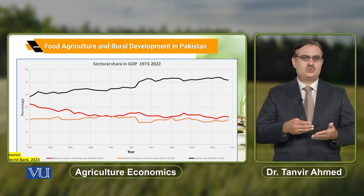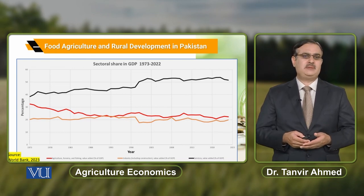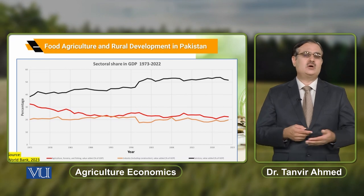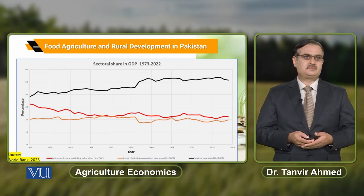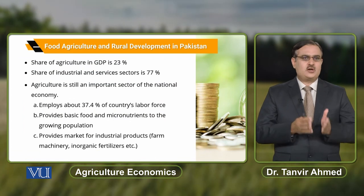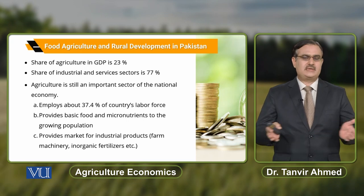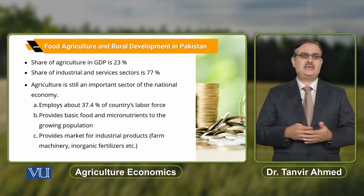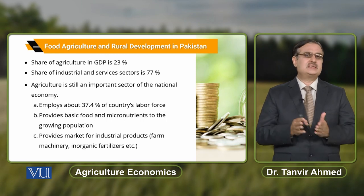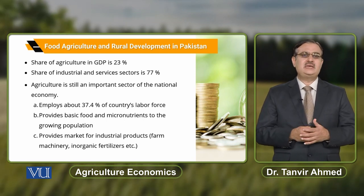The share of the services sector in total GDP has increased over the last 50 years. When we talk about the share of agriculture in GDP in the recent past, it is 23%, and the share of industrial and services sectors is approximately 77%.